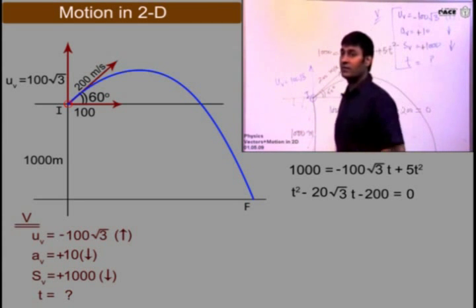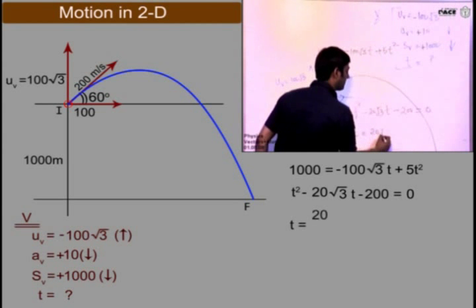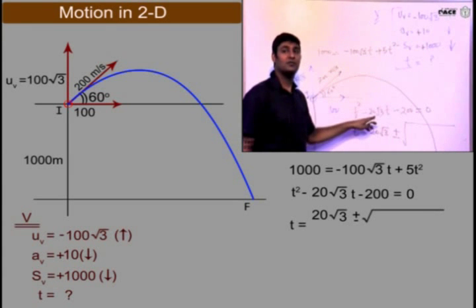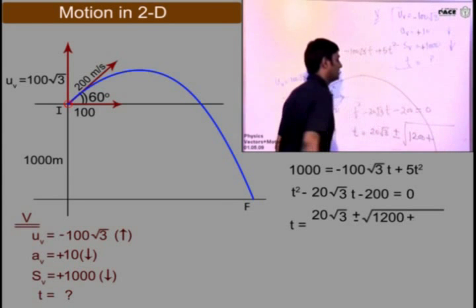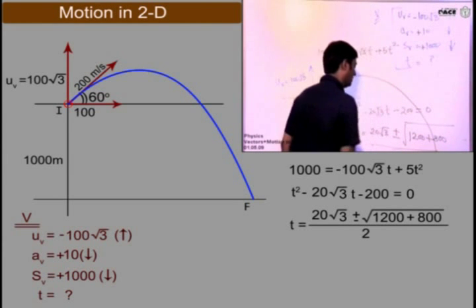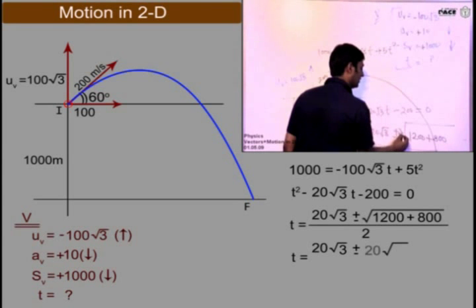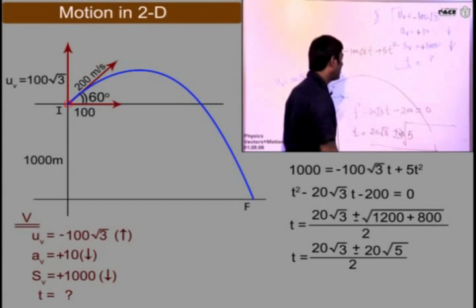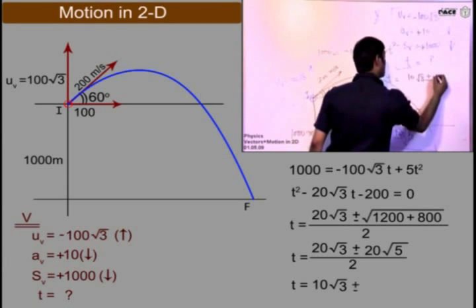This is a quadratic equation. Now you have been doing quadratic equation for almost 2 weeks, so you know the root. So t is equal to minus b plus minus root of b square, which will be 400 into 3, plus 4000 upon 2a. Now this will be 2000, which is 20 root 5. And 2 will get cancelled. So we got time is equal to 10 root 3 plus minus 10 root 5.